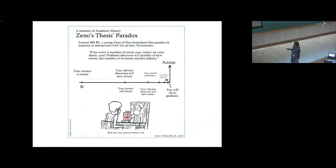This is dedicated to my friends who are doing PhD. This is Zeno's thesis paradox: if for every n number of errors you correct on your thesis, your professor discovers n by 2 number of new errors, the number of revisions reaches infinity. But I hope this should not be the case for my friends.